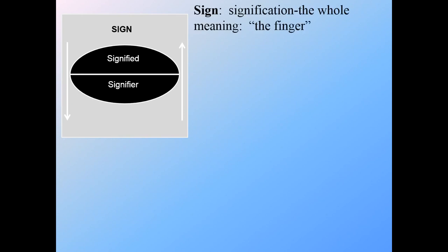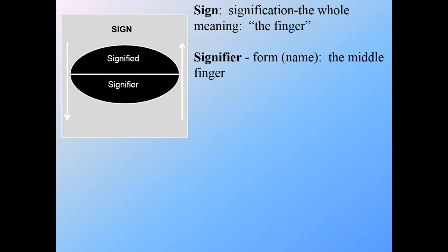When we look at something, we have the sign, which is the signification — this is the whole meaning, the big concept. I'll use a rather amusing example: "the finger." When somebody gives you the finger, that is the sign. Then there's the signifier, which is the form it takes — in our culture, that's the middle finger. And then there's what's being signified: the meaning and concept. To get the sign, you see a blending of the signifier and the signified — the thing that's there and the concept it represents.